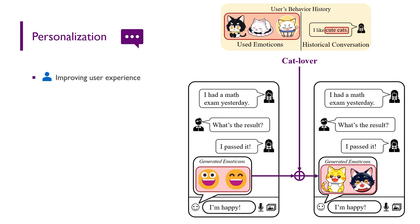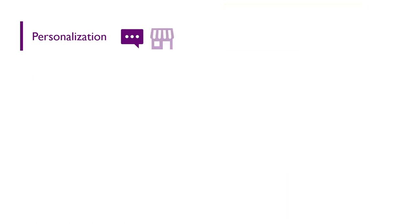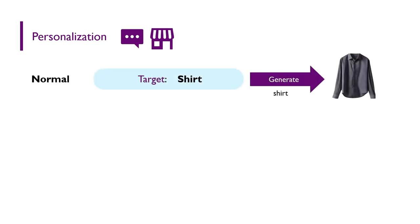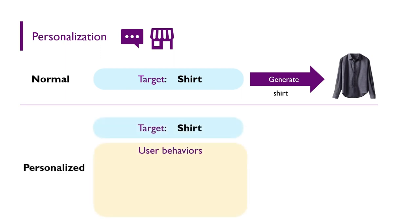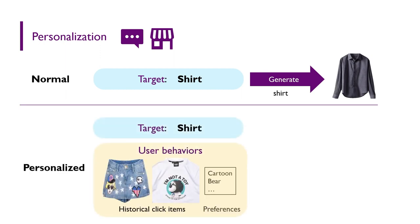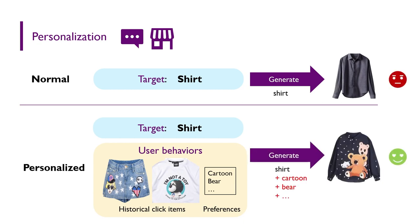In the example of online advertisement, normally when we need an advertisement for shirts, we generate an image of a shirt. For personalization, we analyze the user's historical click items and extract user preferences — cartoon and bear. Then we generate a shirt with cartoon bear patterns, which is more appealing to the user.